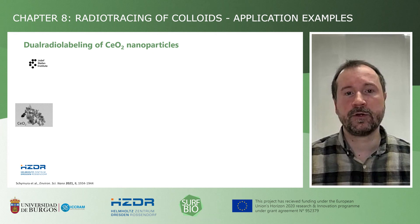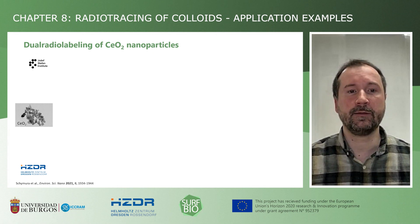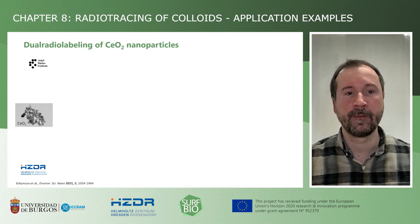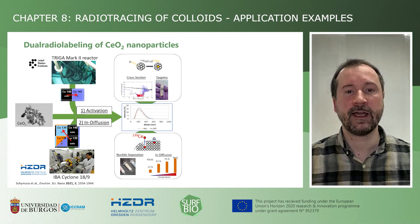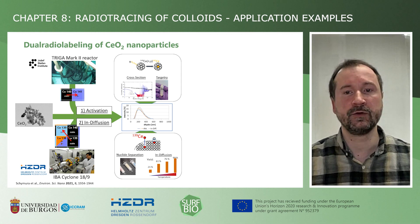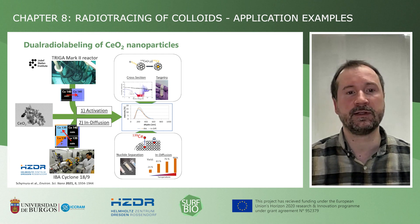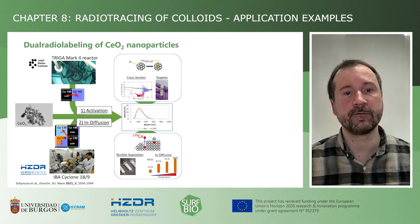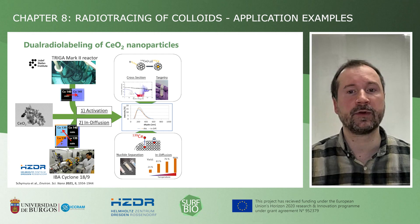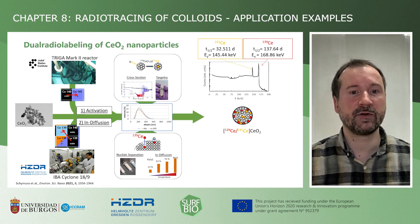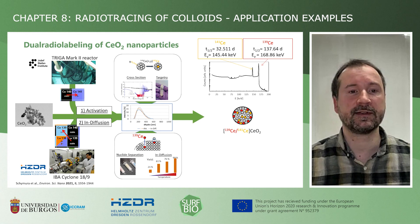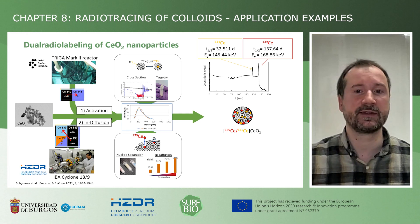In my next example, I want to show you how we further improved on this smart radiolabeling concept by introducing dual labels to combine the two batches of particles into one. With the help of our colleagues at the Josef Stefan Institute, we activated ceria nanoparticles using neutron irradiation at the research reactor in Ljubljana. This way, we produced Cerium-141 equally distributed inside the particles. On top of this, we did the indiffusion labeling with cyclotron-produced Cerium-139.